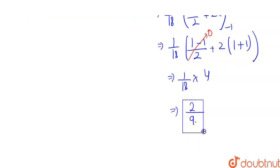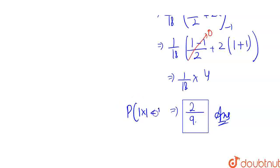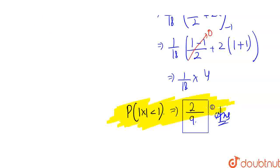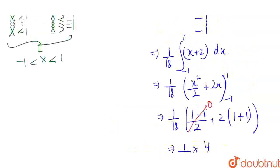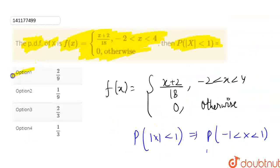So 4/18 simplifies to 2/9. Therefore, the probability of |x| < 1 is equal to 2/9, and this is our answer. Looking at the options, 2/9 is the first option, so the first option is the correct answer.